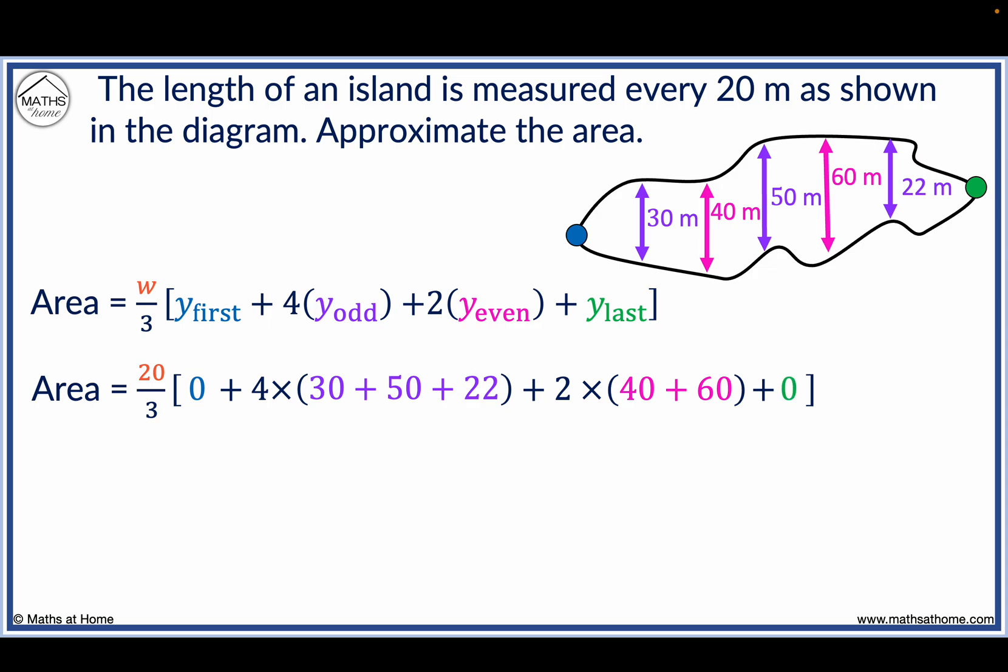As shown by the dot with no length shown. Now 30 plus 50 plus 22 equals 102 and 40 plus 60 equals 100. 4 times 102 equals 408 and 2 times 100 equals 200. So we obtain 20 over 3 times 608.